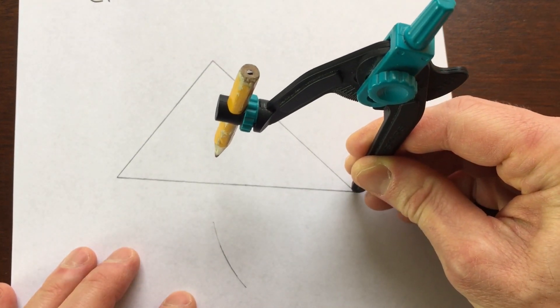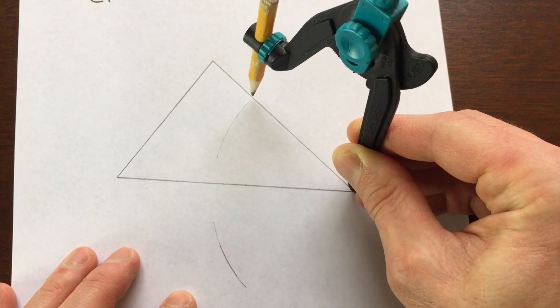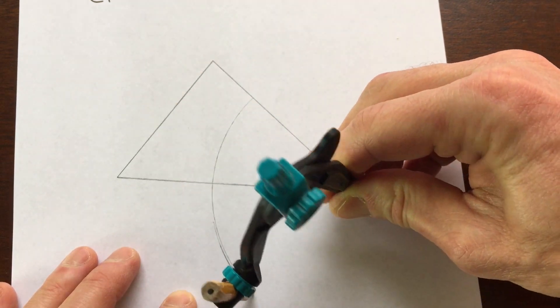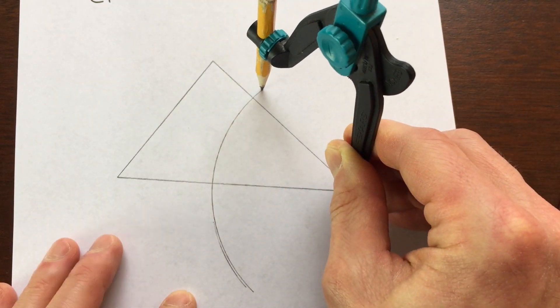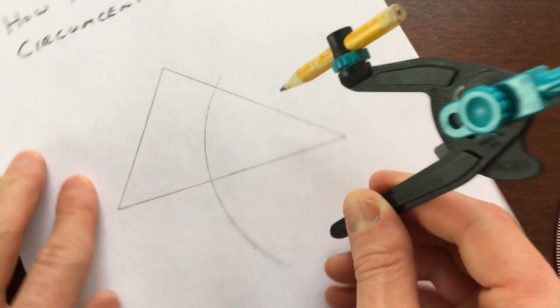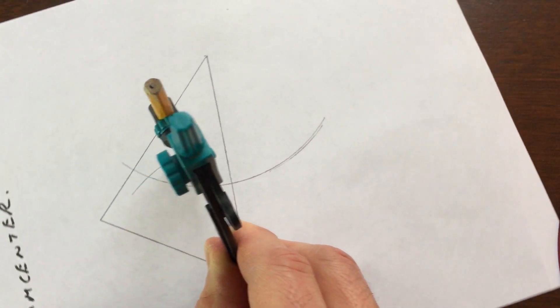And you want to draw it also above the line segment. Now some students will just draw one continuous arc, and that's fine too. So we'll go ahead and do it that way. Then we're going to go to the other endpoint like here and do the same thing.